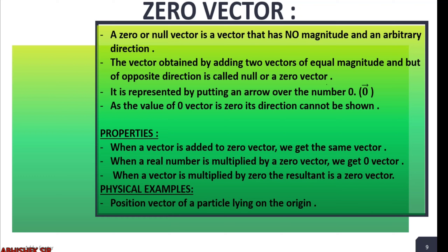The zero vector is obtained by adding two vectors of equal magnitude but opposite direction — they nullify each other and the resultant becomes a zero vector. It is represented by putting an arrow over the number zero. Since its value is zero, the direction cannot be shown, so we say it has arbitrary direction.